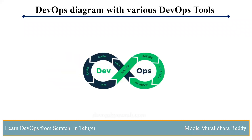Now let's look at the DevOps diagram. Starting with planning — in planning, we have multiple tools. Examples include Jira and Rally. Depending on the company and project, you may use Jira or Rally. After planning, you take a ticket, check the task, and track progress using Jira or Rally. A Scrum Master would also be involved in managing tickets.